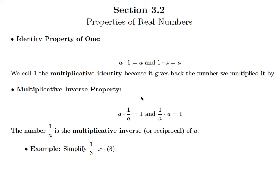In this lesson we're going to look at the identity property of 1 and the multiplicative inverse property. The identity property of 1 says that if you multiply a number by 1, you just get that same number back.